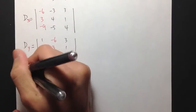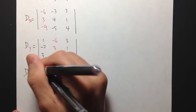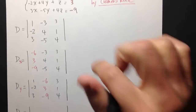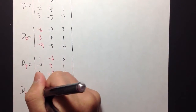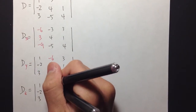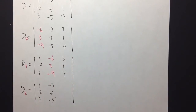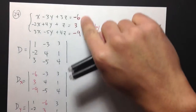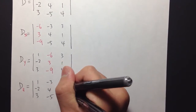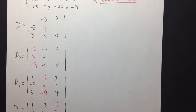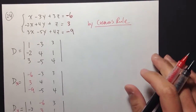For the last one, let's write down Dz. For Dz, we maintain the x and y columns: 1, negative 2, 3 for x, and negative 3, 4, negative 5 for y. Then I replace the z column with negative 6, 3, and negative 9. So here are the 4 matrices we need in order to use Cramer's Rule to solve this system.